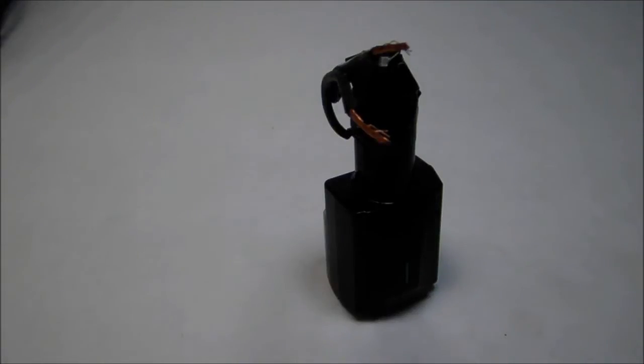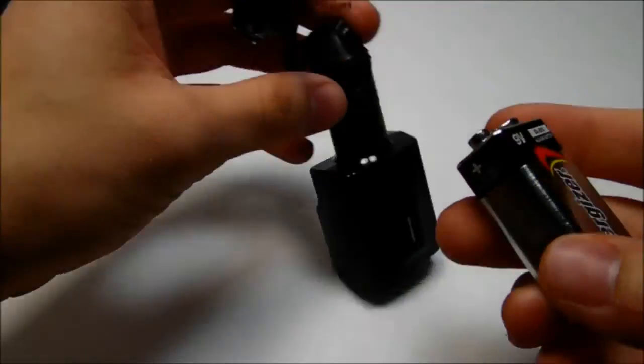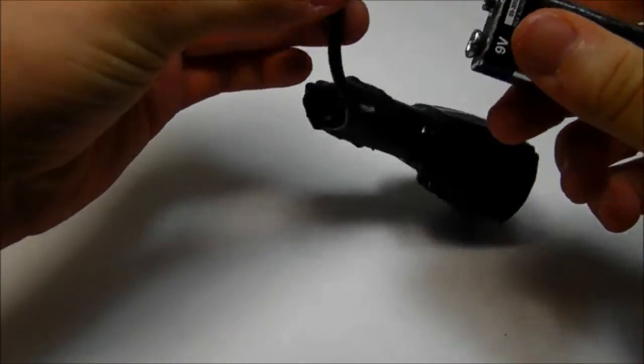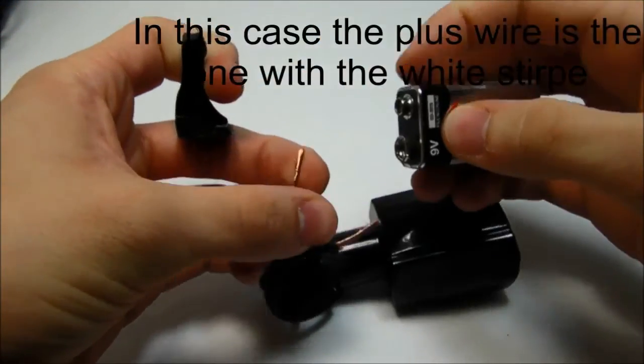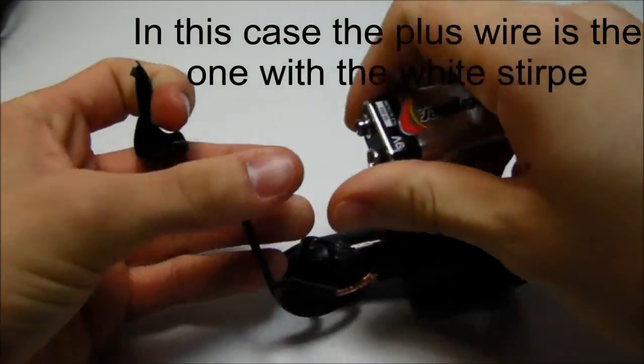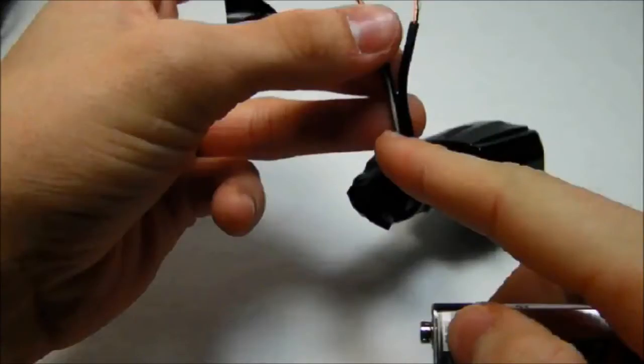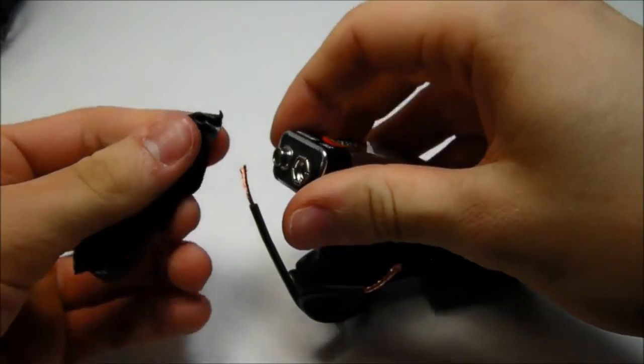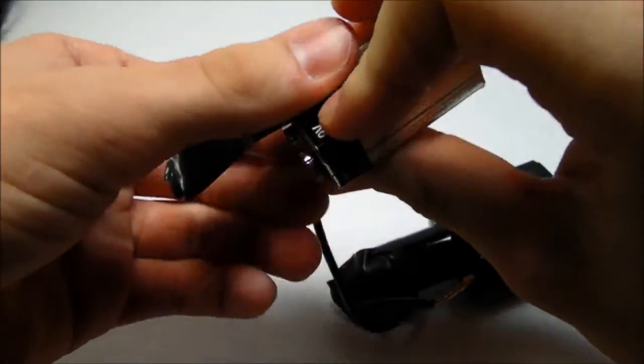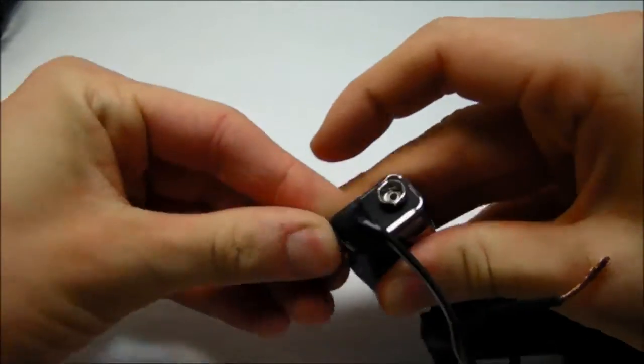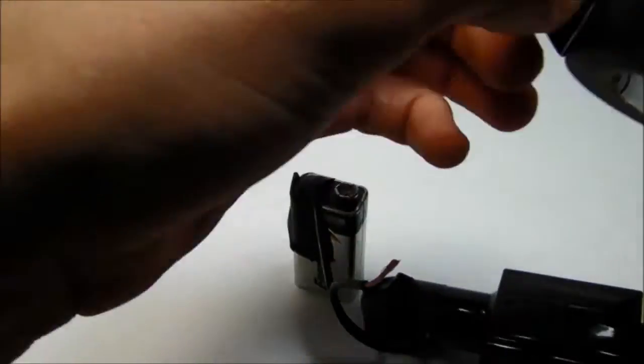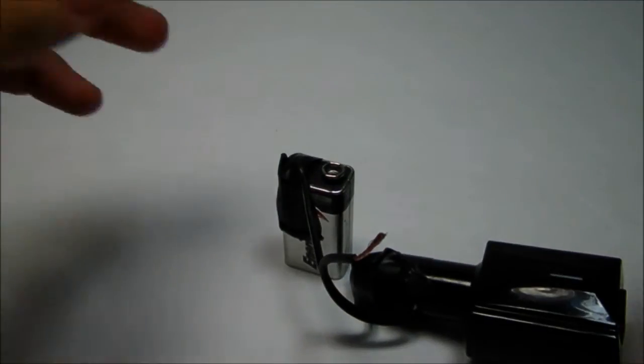Now tape the wires to the battery. Take your positive wire and connect it to the positive terminal. Then do the same with the negative.